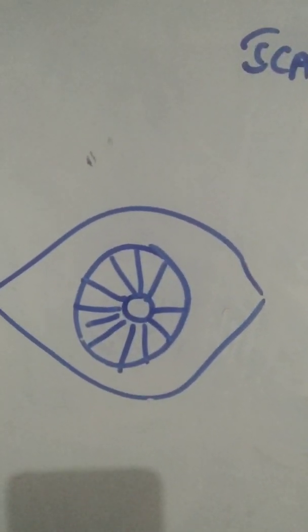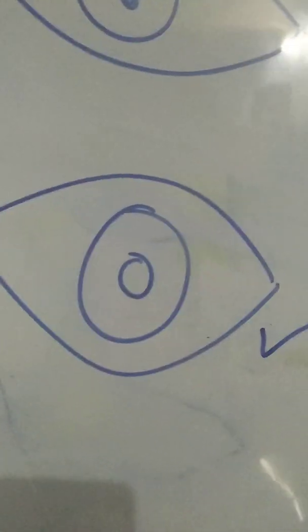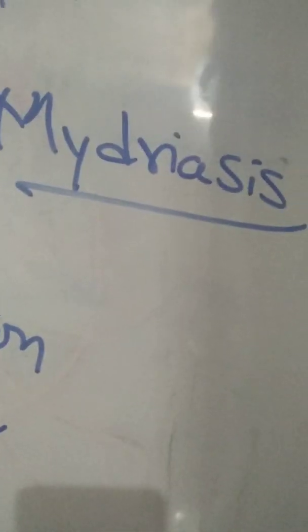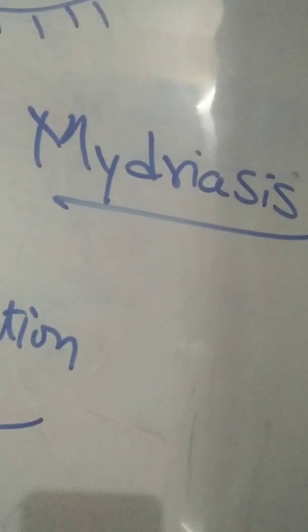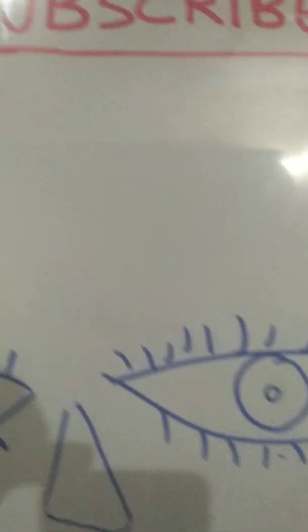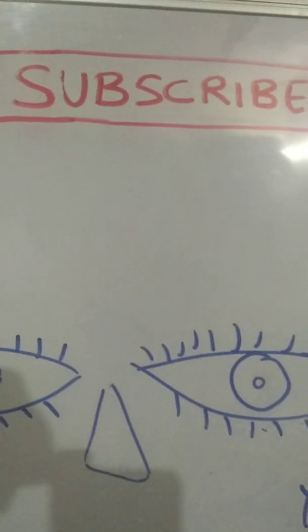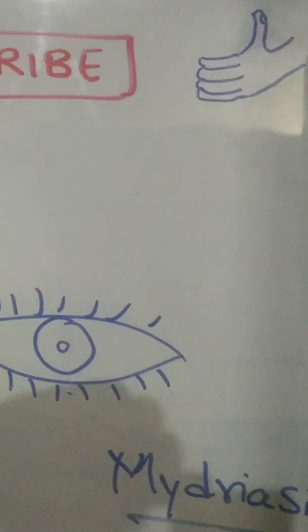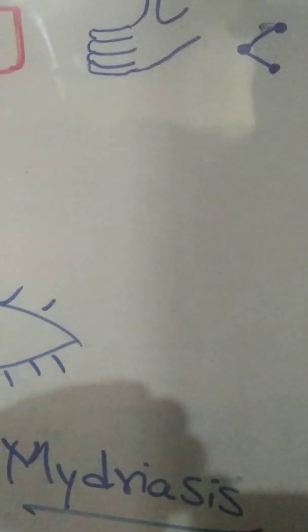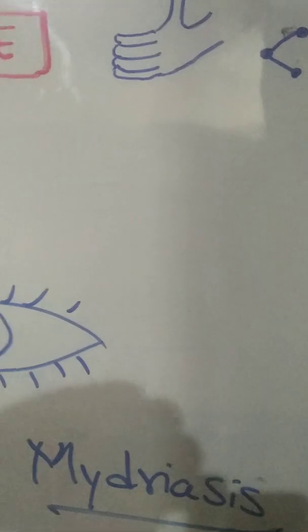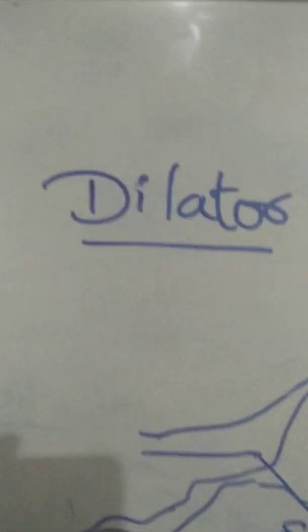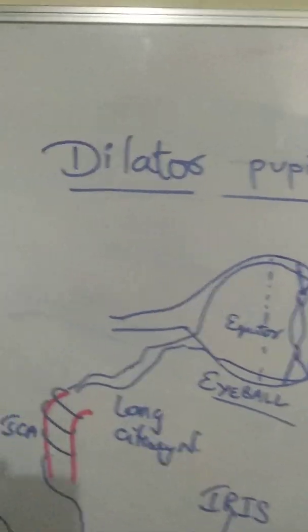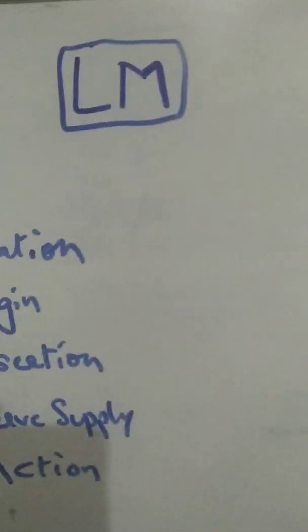The action — dilatation of the pupil — is also called mydriasis. Kindly subscribe to our channel, don't forget to press the thumbs up button, and share the video with your family and friends. Thank you for learning about the dilator pupillae muscle from Logic Medico.